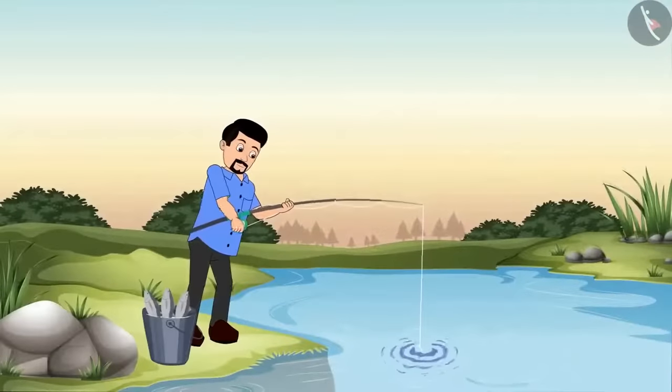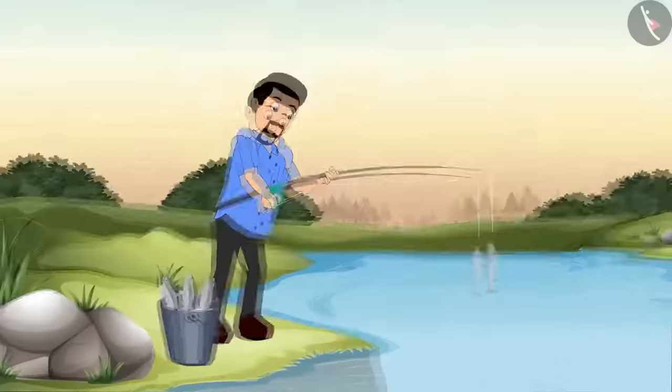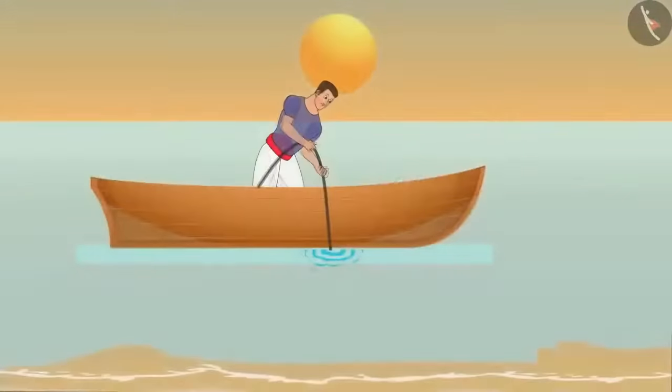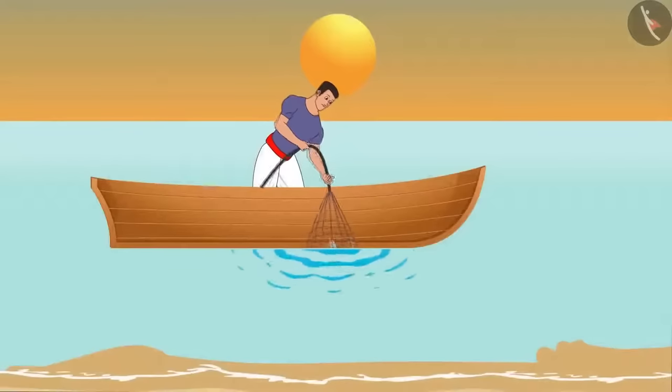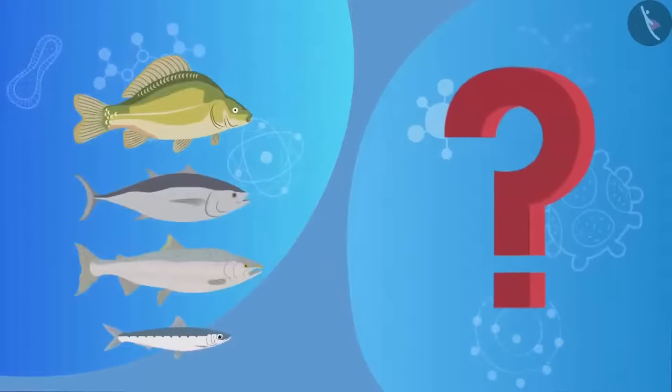But, where do humans catch fish? Humans catch fish from seawater and it is called fishing. Fish are caught from the sea with the help of nets. Friends, what can be done in order to increase fish production?